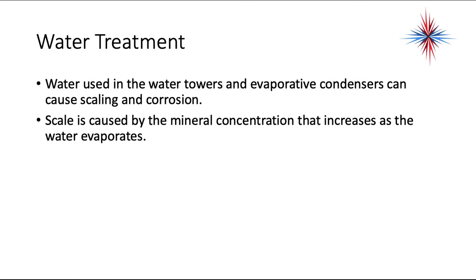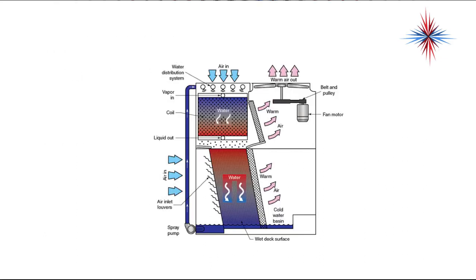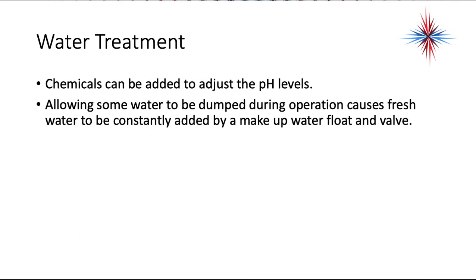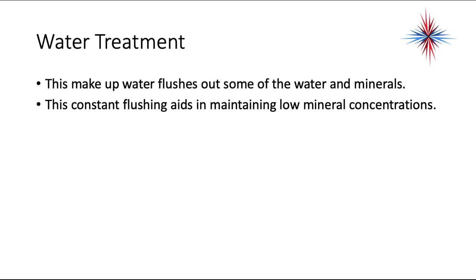Water used in cooling towers and evaporative condensers can cause scaling and corrosion. Scale is caused by increasing mineral concentration as water evaporates — minerals do not evaporate off with the water. The pH level also changes as water evaporates. Conductivity is a way of measuring scaling potential and pH levels, and these should be monitored. Chemicals can be added to adjust pH, and continuously dumping some water while adding make-up water helps flush out minerals and maintain low mineral concentrations.